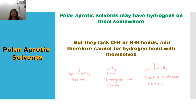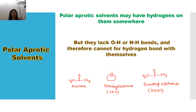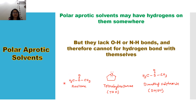Polar aprotic solvents may have hydrogen, but it is bonded to carbon (C-H), not to oxygen or nitrogen. Since they don't have O-H or N-H bonds, they cannot form hydrogen bonds. Polar aprotic solvents are polar and have dielectric constant and dipole moment values, but they cannot form hydrogen bonding. Examples include acetone — where hydrogen is attached to carbon — as well as tetrahydrofuran and dimethyl sulfoxide (DMSO). These are all polar aprotic solvents.